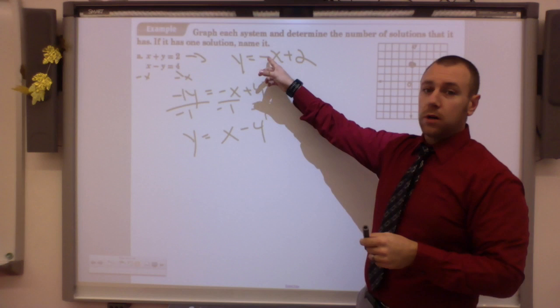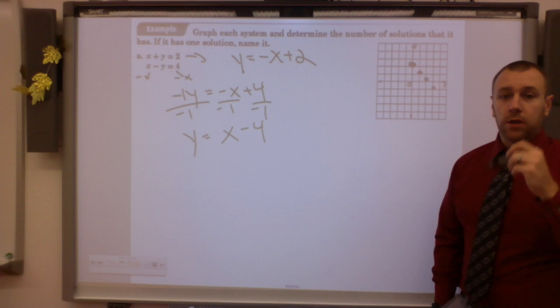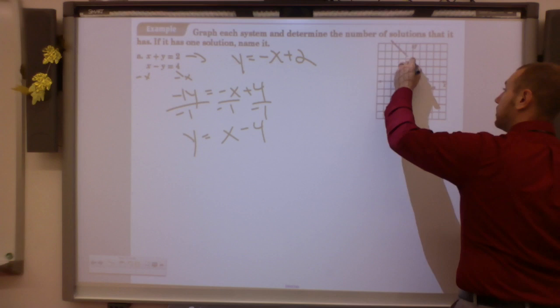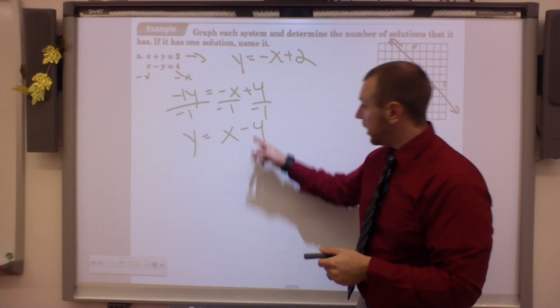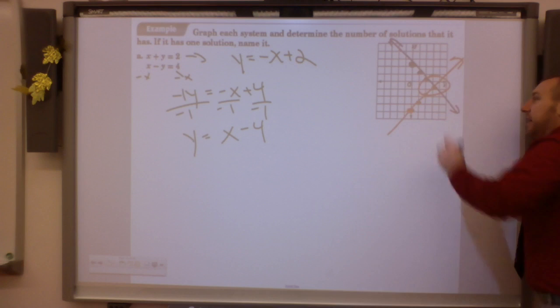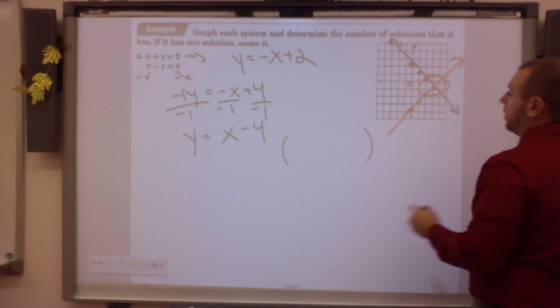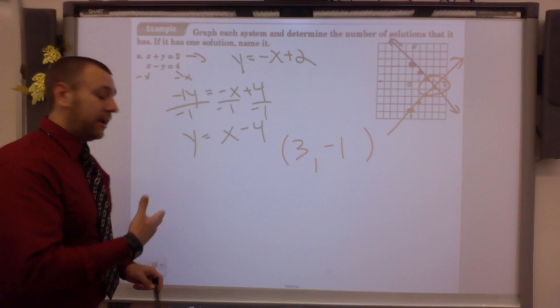So I'll graph my first equation. I'm going to start at 2. And now I'm going to go down 1 over 1 because there's an invisible negative 1 there. Down 1 to the right 1. Down 1 to the right 1. Down 1 to the right 1. I always find it helpful to draw that line or continue those points throughout. The second equation, I start at negative 4. 1, 2, 3, 4. And now I'm going to go up 1 over 1, up 1 over 1, up 1 over 1. You see, if I continue it, I find this intersection point. That intersection point is the solution. So I write my solution as 3, negative 1. That is the solution to that system.